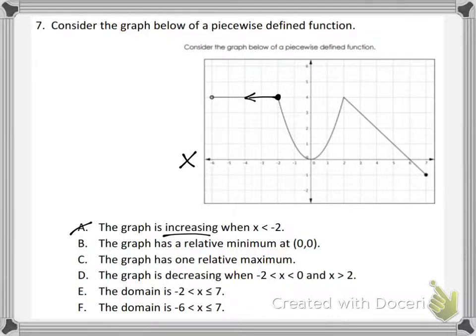The graph is getting, the x values are staying the same, actually. This is actually a constant right here. It's not increasing or decreasing. So is the graph increasing when x is less than negative 2? No, it is not. So it is not choice A.